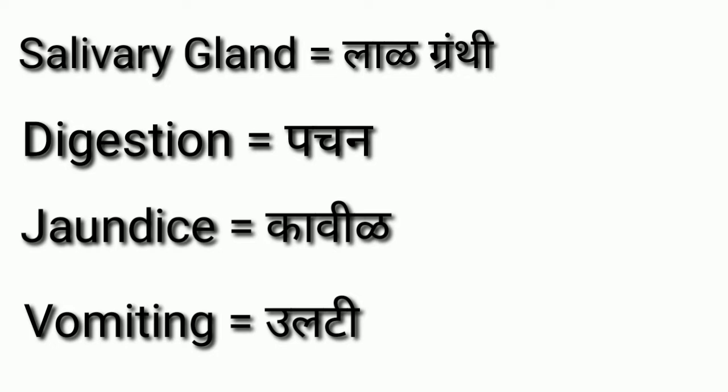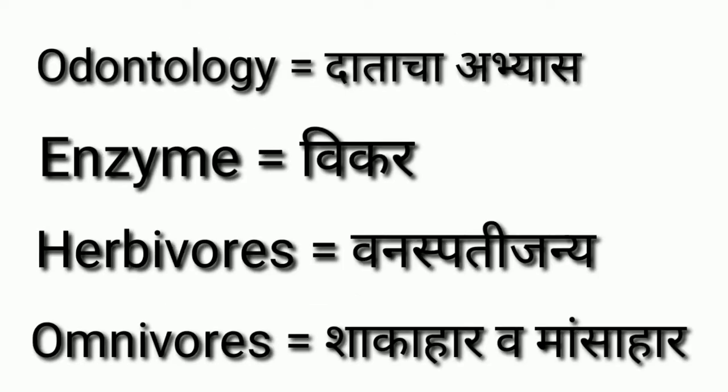Odontology means data zha abhas karne shastra (the study of teeth). Enzyme means vikar. Herbivores means vanaspati janya (plant-eating animals). Omnivores means shakahar va masahar ase doni hi grahan karne (those who eat both plant and meat).